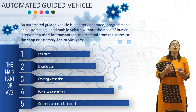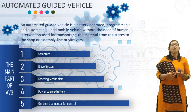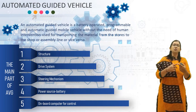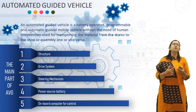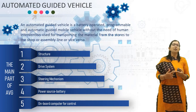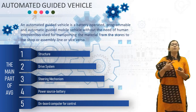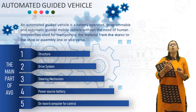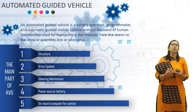The main parts of Automated Guided Vehicles are: first, the Structure; second, the Drive System; third, the Steering Mechanism; fourth, the Power Source Battery; and lastly, the Onboard Computer for control.